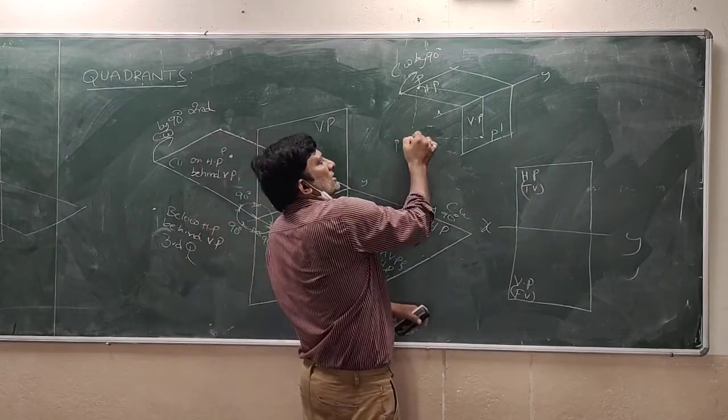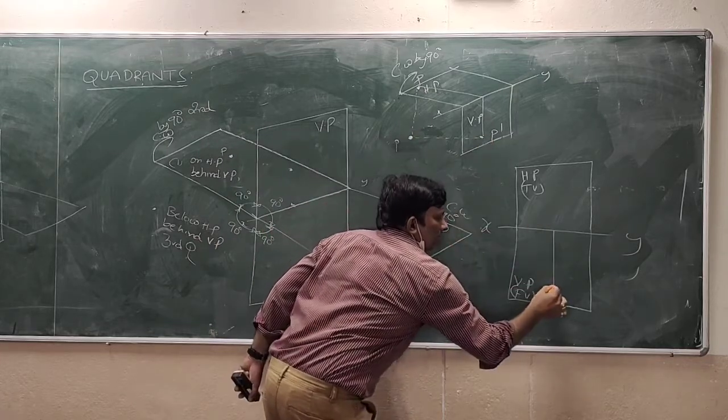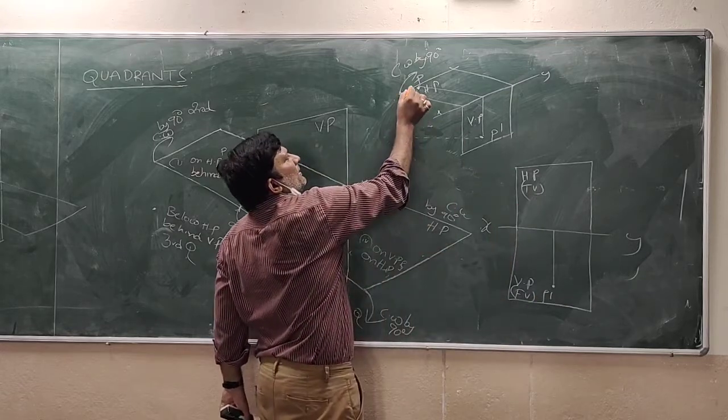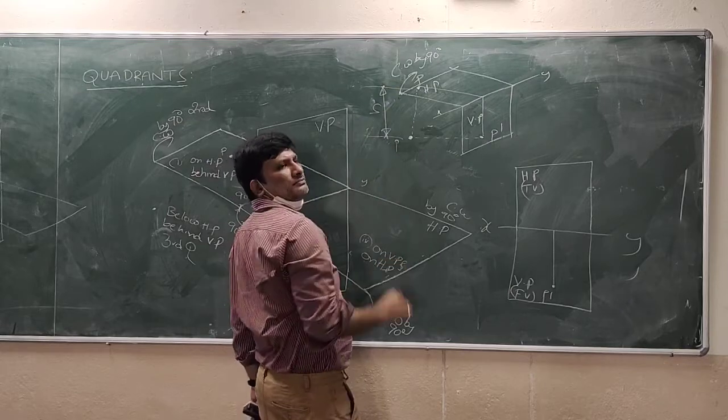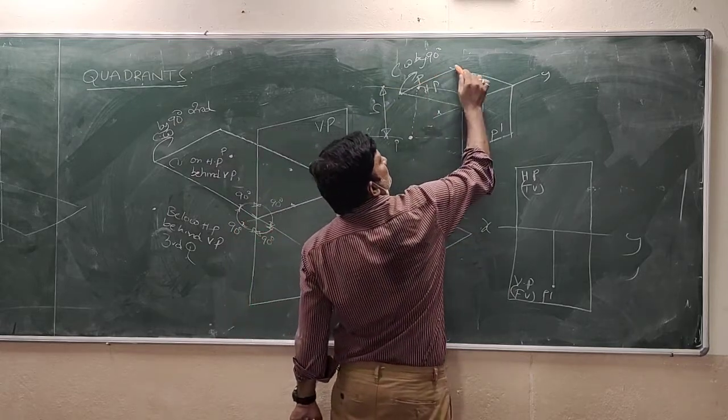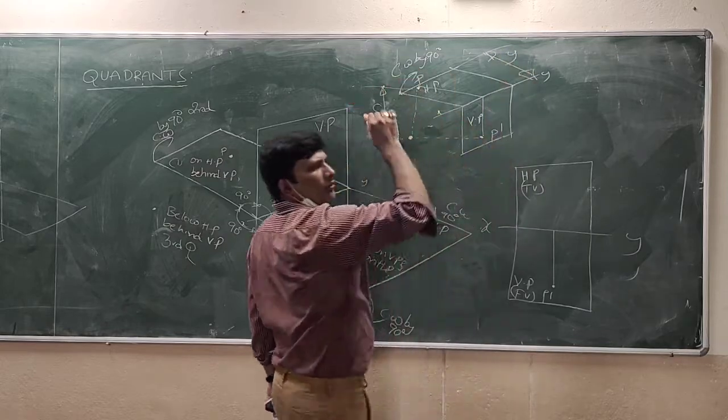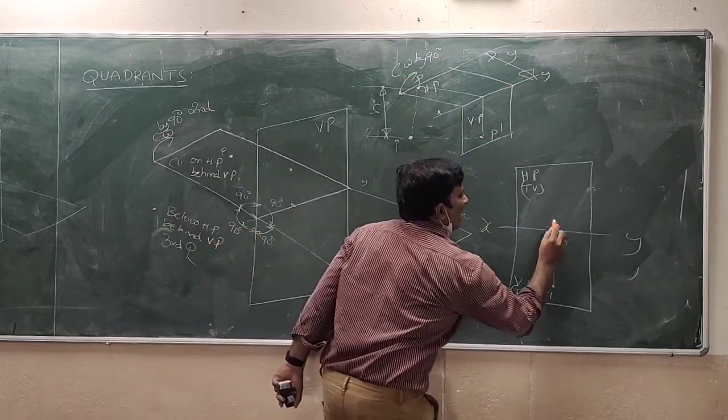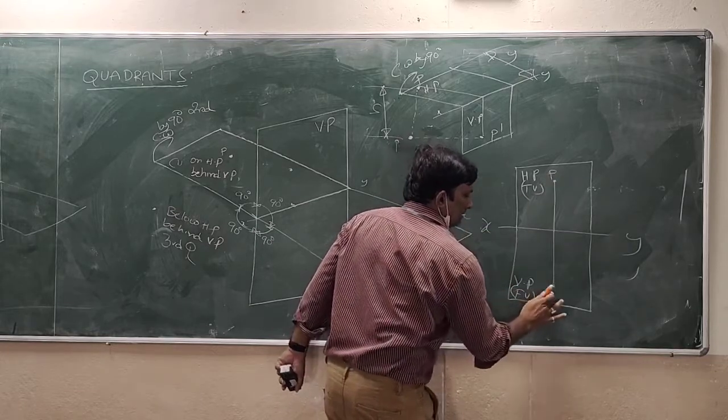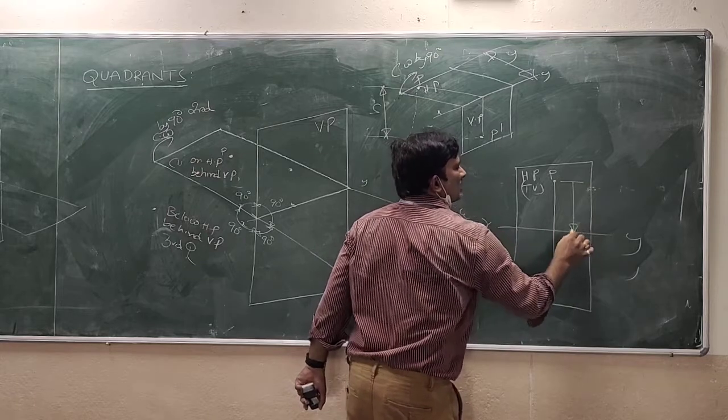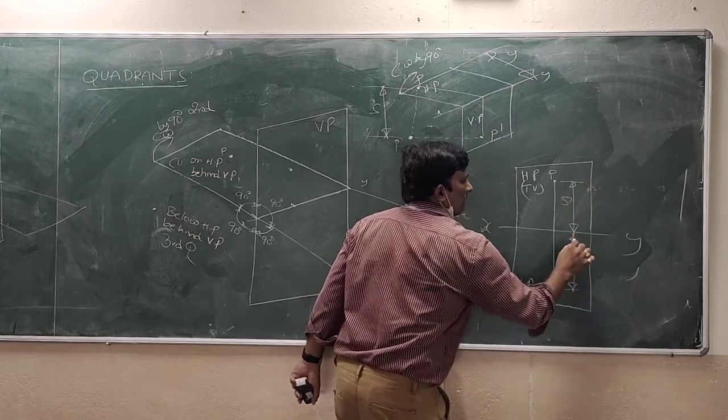Below here, I am representing the point as P'. What is this distance? Anybody? H, very good. What is this distance? Y. See here, this is the X line, and this is the point P. This is the point P'. What is the distance? Y. What is this distance? H.